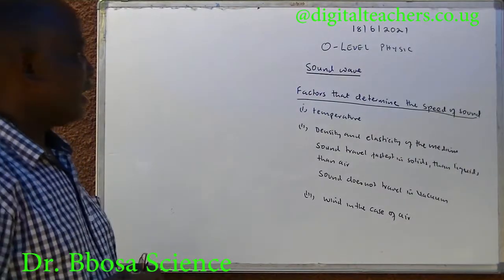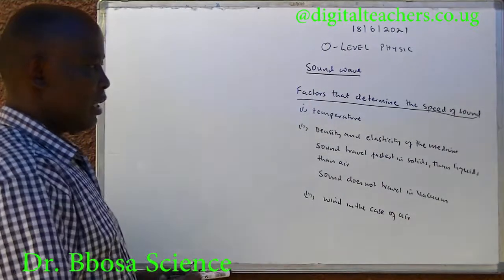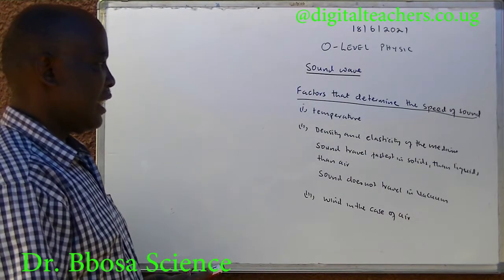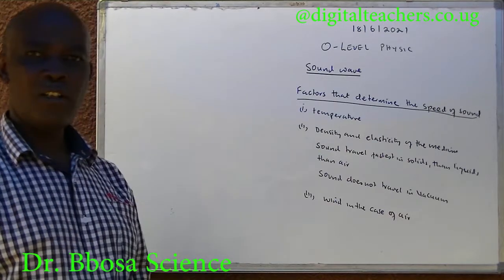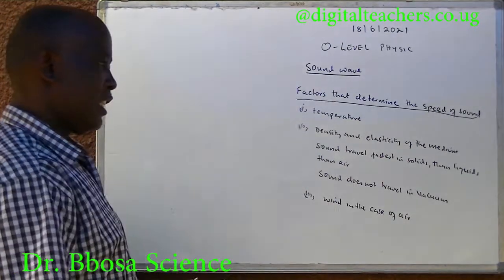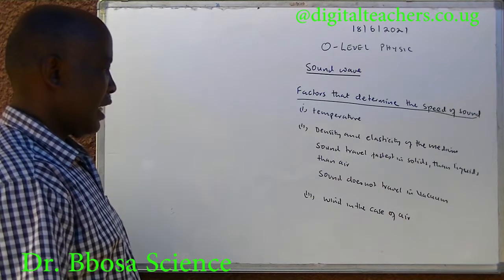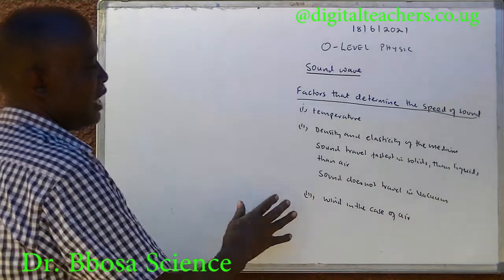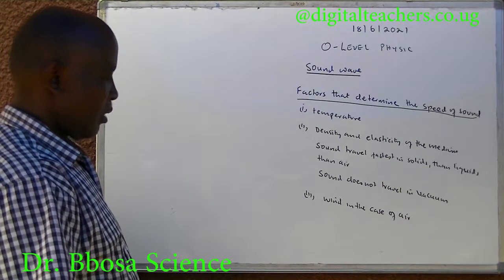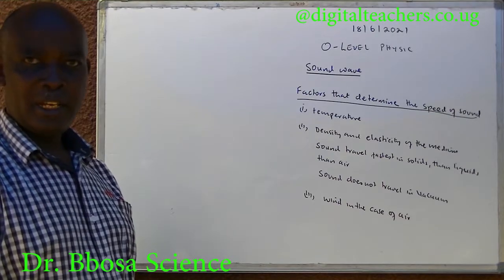Factors that determine the speed of sound. One: temperature. Two: density and elasticity of the medium. Sound travels fastest in solids, then liquids, then air. Sound does not travel in a vacuum. Three: wind, in the case of air.